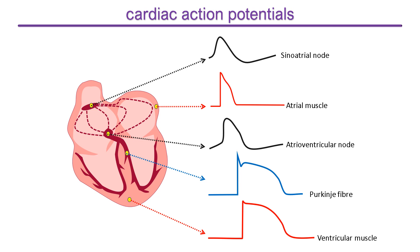The action potentials are all drawn on the same voltage and time scale here to clarify the comparison. The differences among the action potentials are due to differential expression of different ion channels. In this presentation I will explain the most extreme differences between the sinoatrial node and ventricular muscle cells.